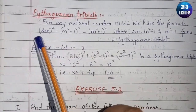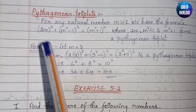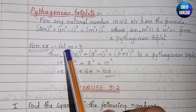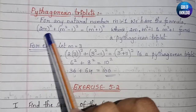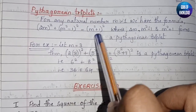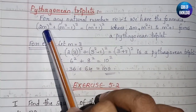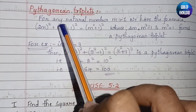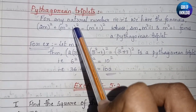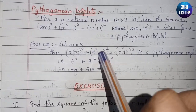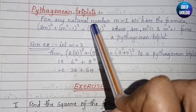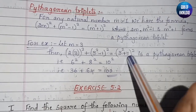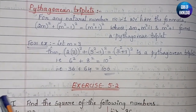There are three terms in this formula. For example, let m = 3. We substitute into the formula: 2×3 whole squared, plus 3²-1 whole squared, equals 3²+1 whole squared. This gives us a Pythagorean triplet.